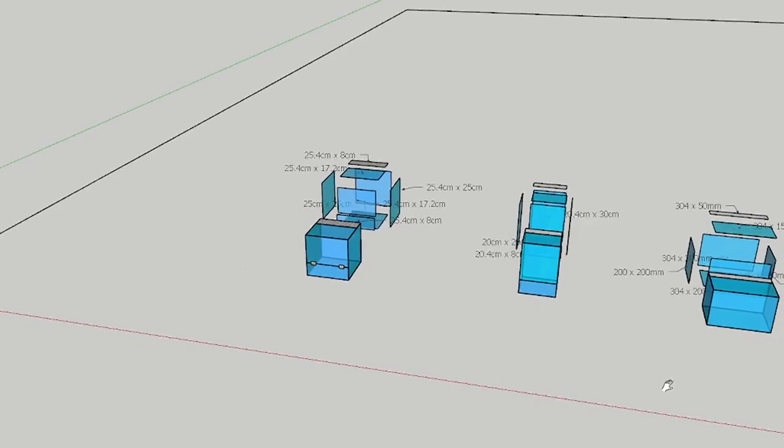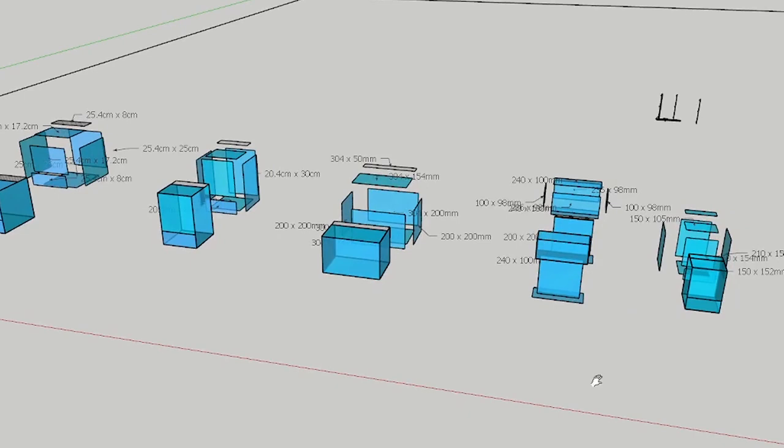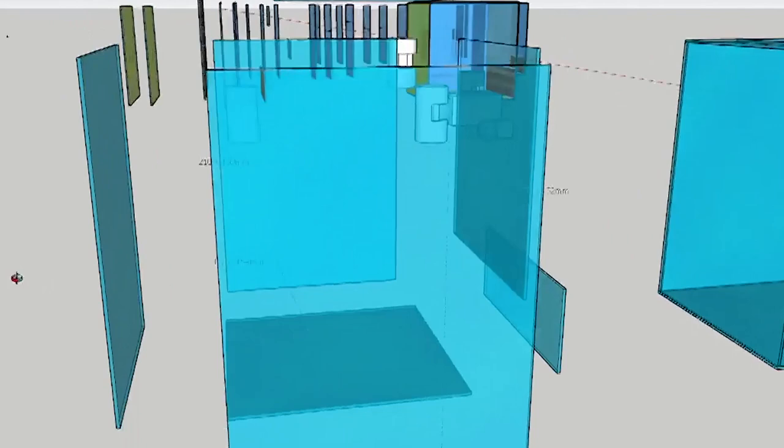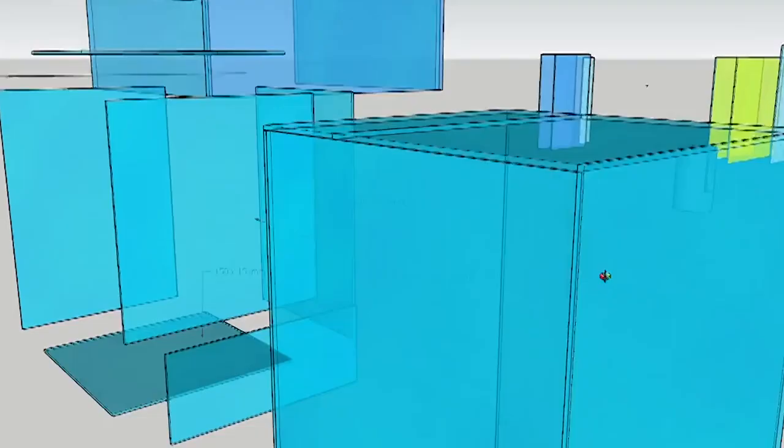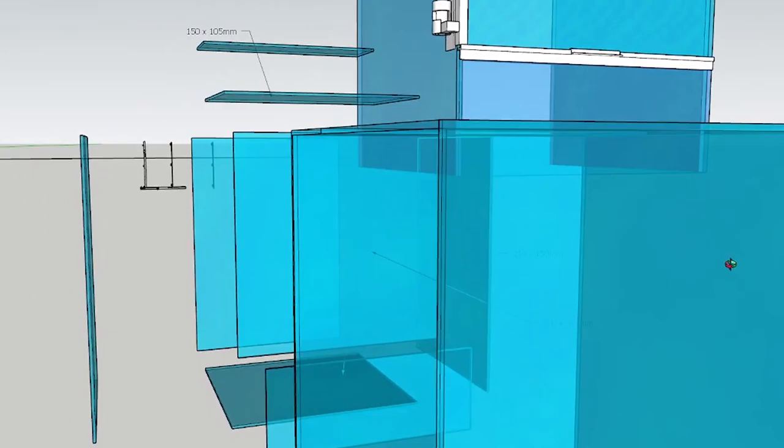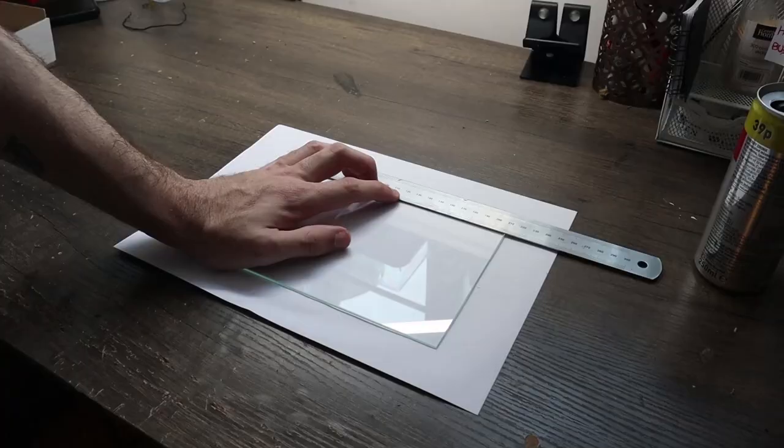The starting point for me on these is always using a program to plan my build and get a blueprint of exactly how I want it to look. This will make it a lot easier when it comes to understanding how all the pieces are going to fit together and the exact measurements you're going to need. I use an application called Google SketchUp. There is a free version which will do everything you need it to do and it lets you design your own builds and you can save them for the future too.